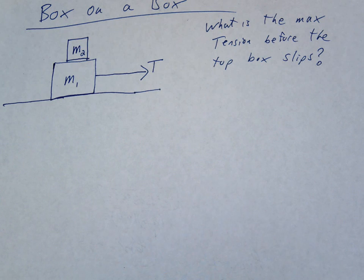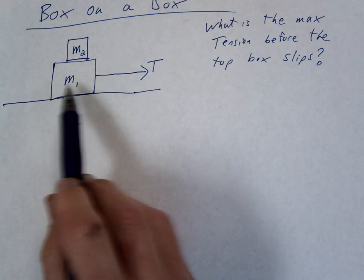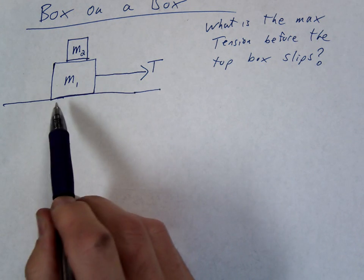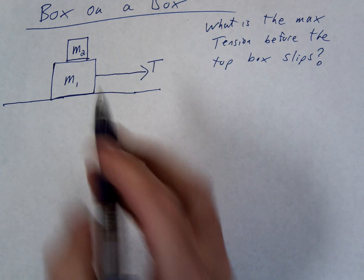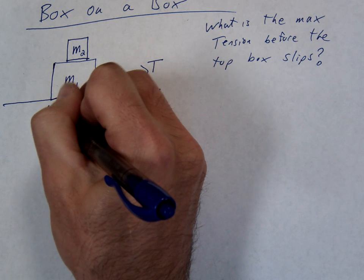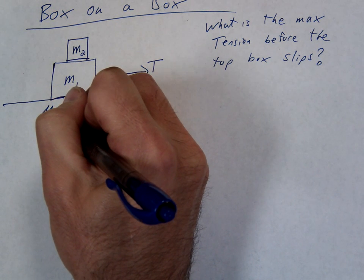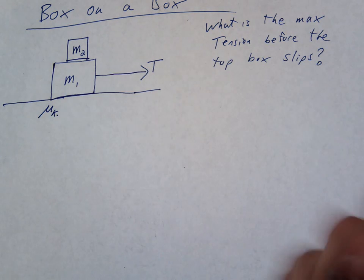Let's define some other terms. First of all, the bottom box is going to be sliding across the ground, so what kind of friction is involved? Kinetic, so we'll call this mu K.